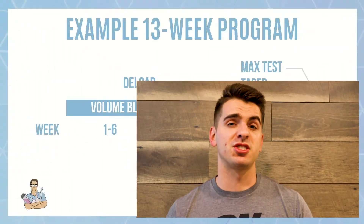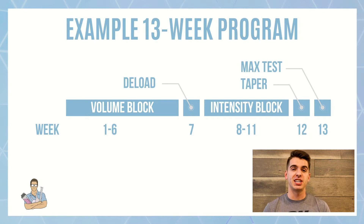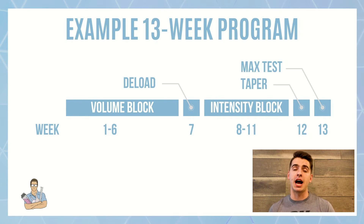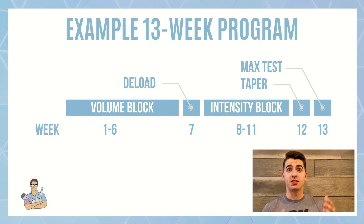If you're more intermediate to advanced, you need to decide how long each mesocycle is going to be and whether to incorporate linear or undulating periodization. You also need to decide what your goals are for each mesocycle. For example, let's say I'm writing a 13-week training program. The first six weeks are a volume or accumulation block — maybe 15 to 18 sets per week. Week seven is a deload. Then a four-week strength block where we drop sets from 15–18 down to 10–12, but increase intensity, working at a higher percentage of one rep max or a higher RPE. These numbers are just examples — not set in stone — but it's important to know these variables so you can do this for yourself.